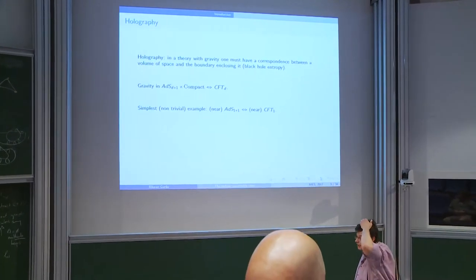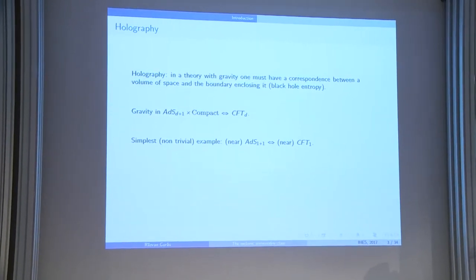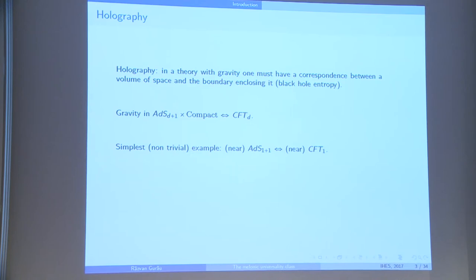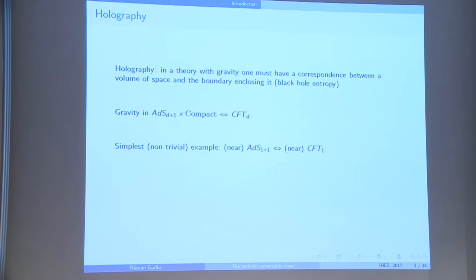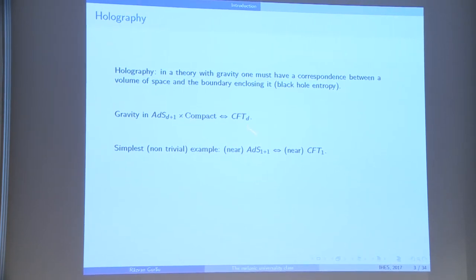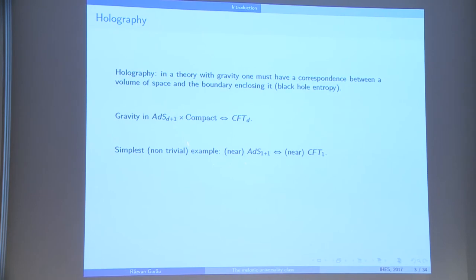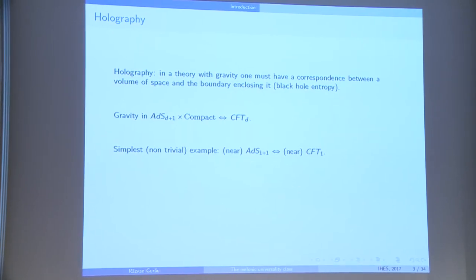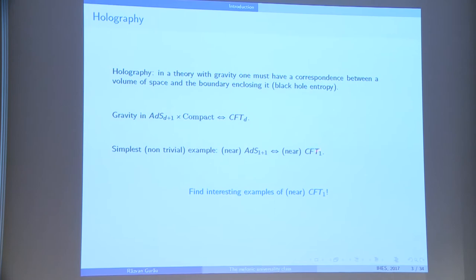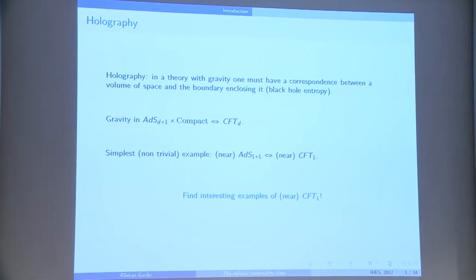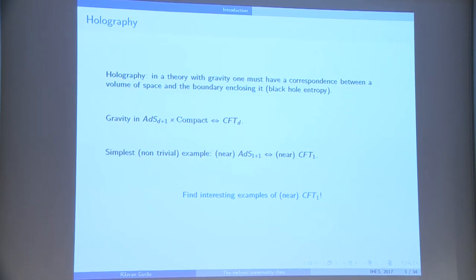The main motivation, at least today, for getting interested in these models comes from holography. The idea that in theories which contain gravity, a volume of space and its boundary should be in some correspondence is rendered more concrete by the ADS-CFT correspondence. From my point of view, the simplest example would be to try something in two dimensions. We need examples of interesting CFTs in dimension one, which gives us good candidates for the right-hand side of the ADS-CFT correspondence.